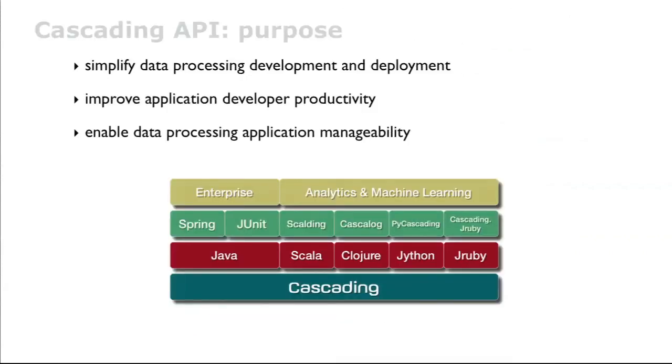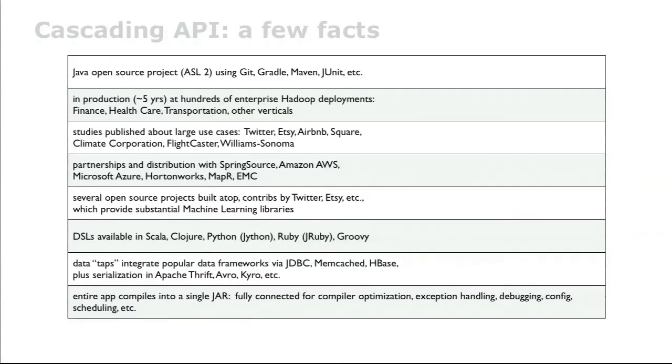As far as the intention for cascading, the basic mission is we're trying to simplify data processing. We address a couple major audiences. One is at the apps layer, developer productivity with big data apps. The other is to enable much more visibility into how apps are running in operations. It's a Java open source project, now Apache license. It uses Git and Gradle, Maven, JUnit, etc. It's been around for almost five years and we have hundreds of deployments, large-scale Hadoop deployments. That may sound like a small number, but when you look at enterprise Hadoop deployments out there right now, that's pretty good coverage.